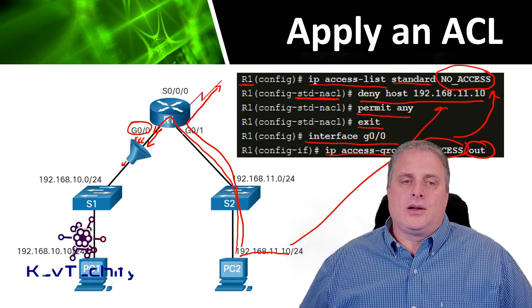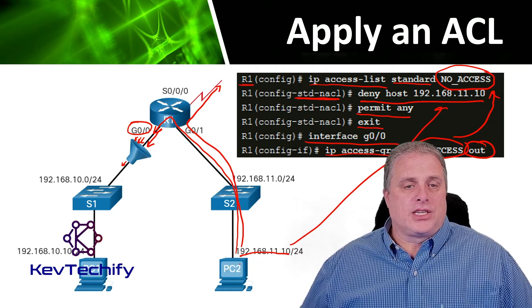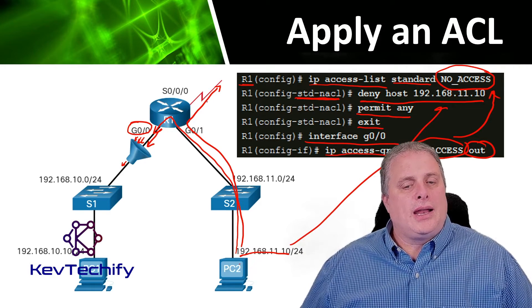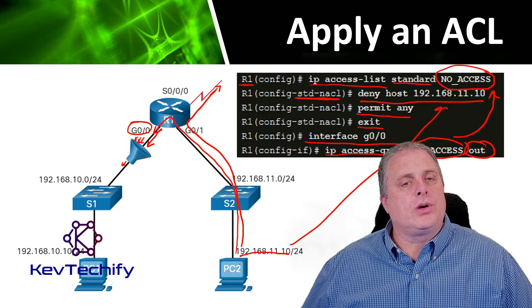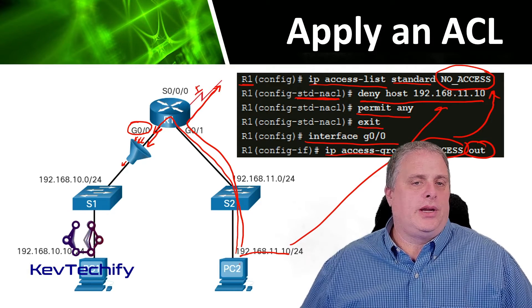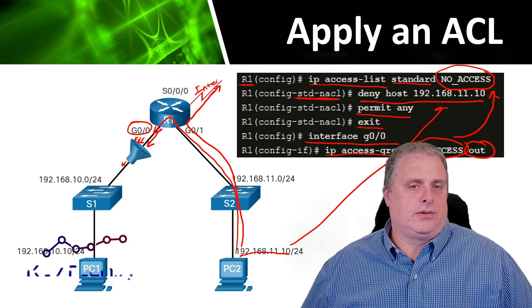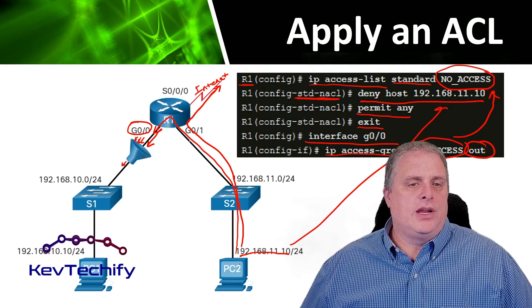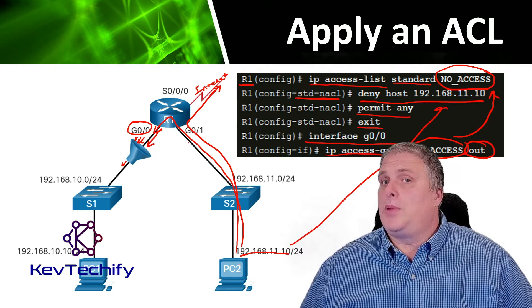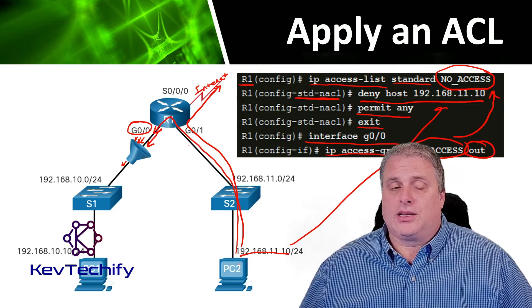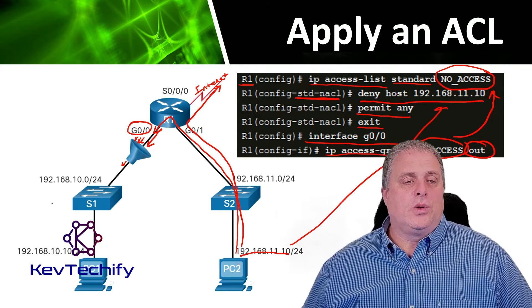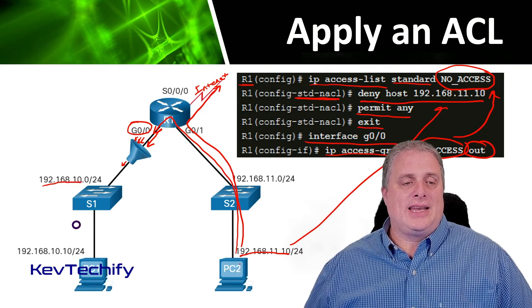You could apply that access control list to inbound traffic, but it would block all traffic coming into the router and PC2 would never be able to go across the serial connection — probably your internet connection. If you applied it to all inbound traffic on G0/1, PC2 would not be able to browse the internet. We just want to stop PC2 from getting onto the 192.168.10 network.